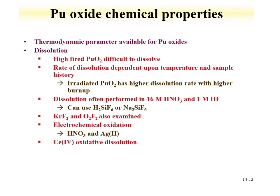An overview of the thermodynamic properties of plutonium oxides is available in the chemical thermodynamics of plutonium literature. For the nuclear fuel cycle, an important consideration is that high-fired plutonium dioxide is difficult to dissolve — relevant for MOX fuel that has been burned and recycled multiple times. Dissolution depends on temperature and sample history, with irradiated dioxide dissolving faster at higher burnup. Dissolution can often be aided by addition of HF, stronger oxidizing agents, electrochemical oxidation, or use of cerium.